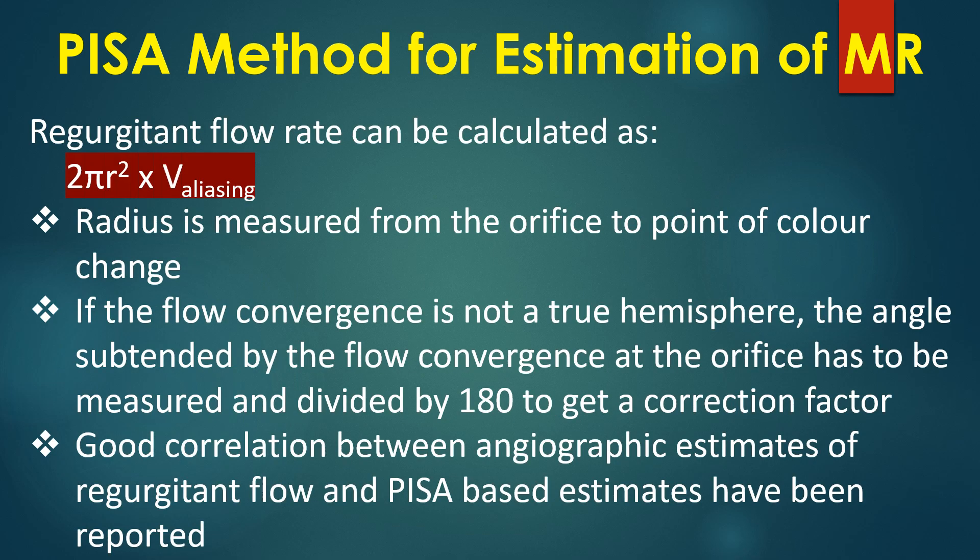Regurgitant flow rate can be calculated as 2π R² multiplied by the aliasing velocity. The radius is measured from the orifice to the point of colour change.